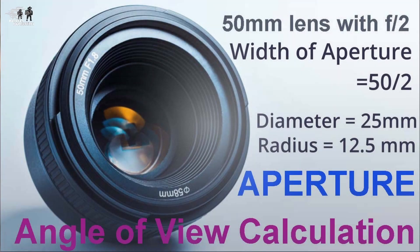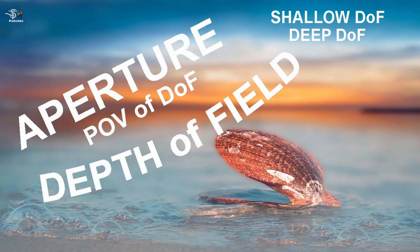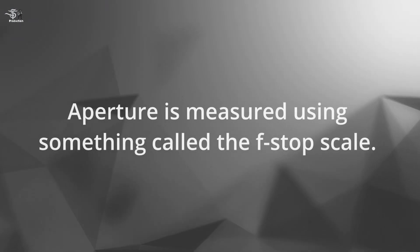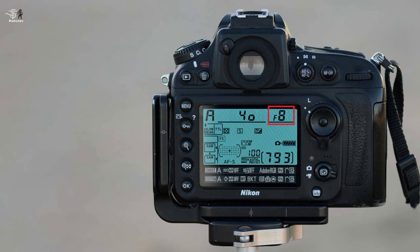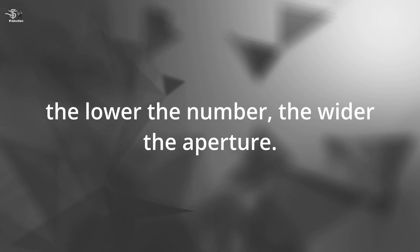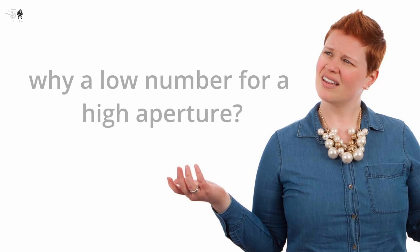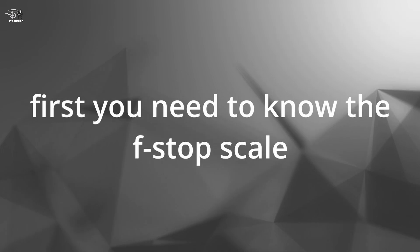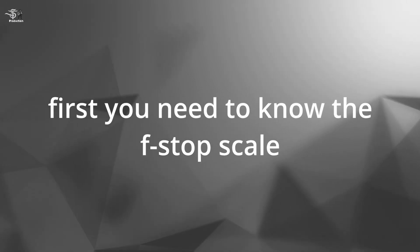If you have watched the previous video about aperture, you should be familiar with how this works. Aperture is measured using something called the f-stop scale. On your camera you will see 'f' followed by a number. The number denotes how wide the aperture is, which in turn affects the exposure and depth of field. The lower the number, the wider the aperture. The f-stop scale is as follows.